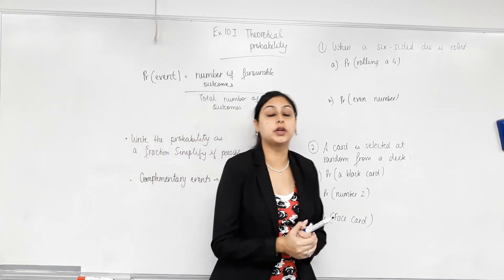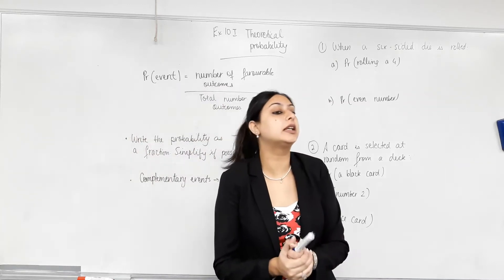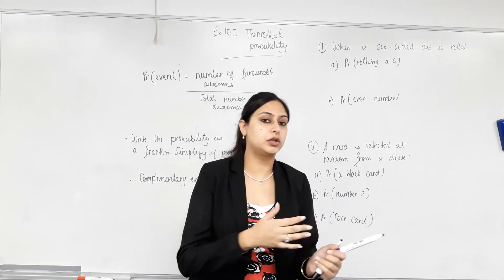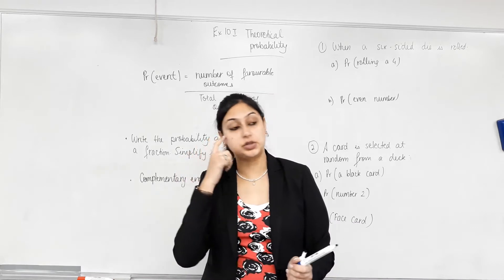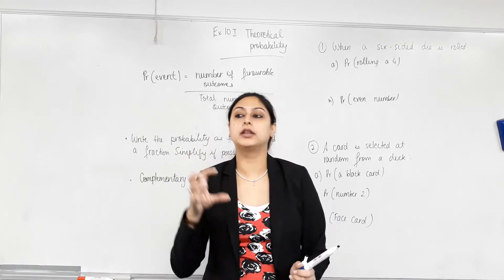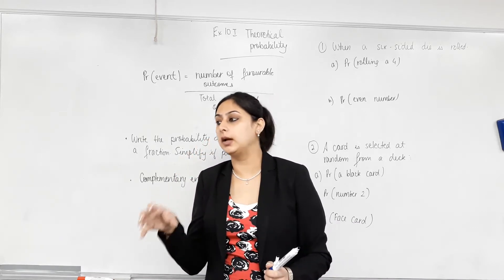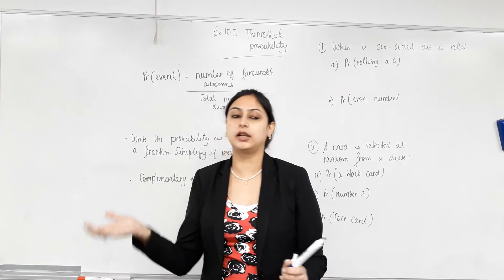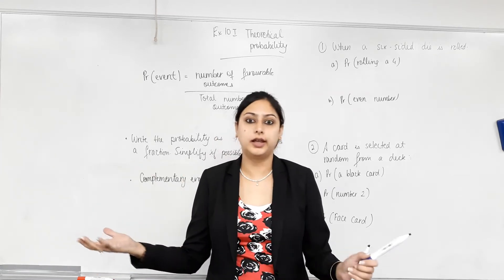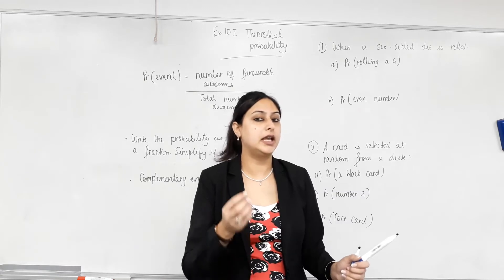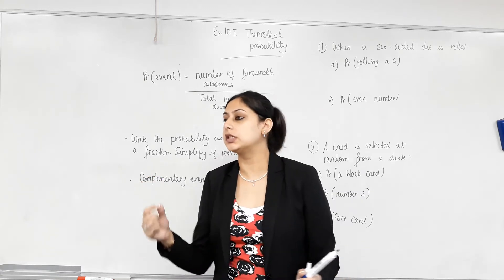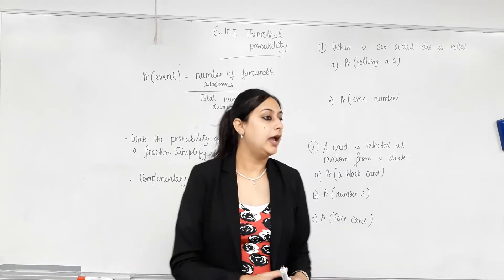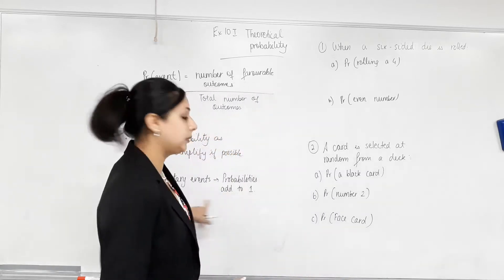We're continuing on and we are talking about calculating probabilities from an event. Earlier we just talked about how likely an event is to happen. Now we are going to find the probability in numbers. So rather than just describing it in words — very likely, highly likely or somewhat unlikely — we're now finding in numbers what is the probability of an event. We'll also talk about complementary events.